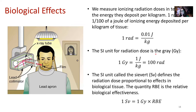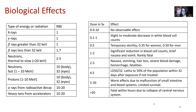There's an SI unit for radiation dose called the gray, abbreviated as capital Gy. One gray is one joule per kilogram, which is also equal to 100 rad. There's also another SI unit called the sievert, and it determines the radiation dose proportional to the effects in biological tissue. The quantity RBE is the relative biological effectiveness, so the sievert is your unit of gray times the relative biological effectiveness.